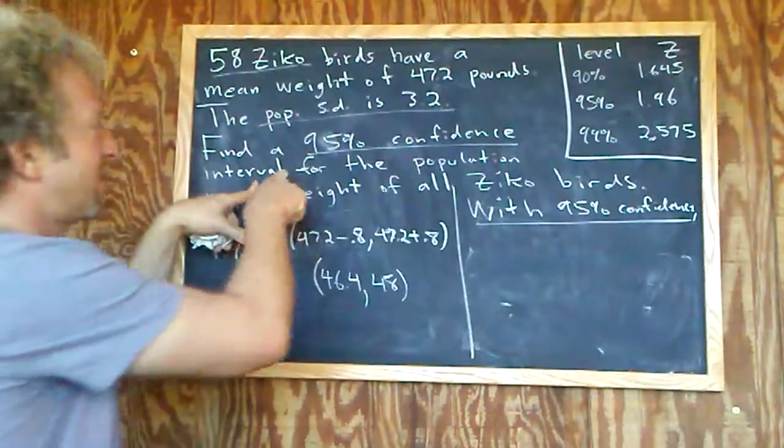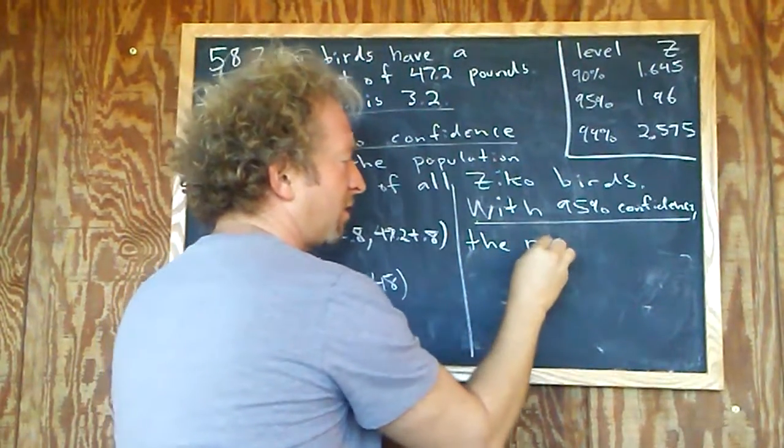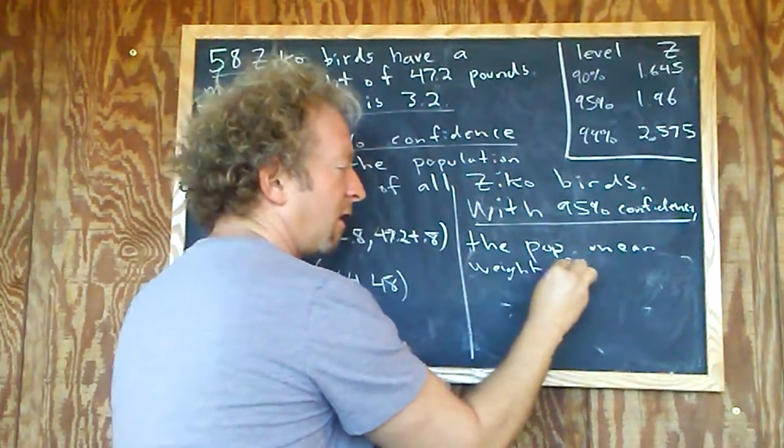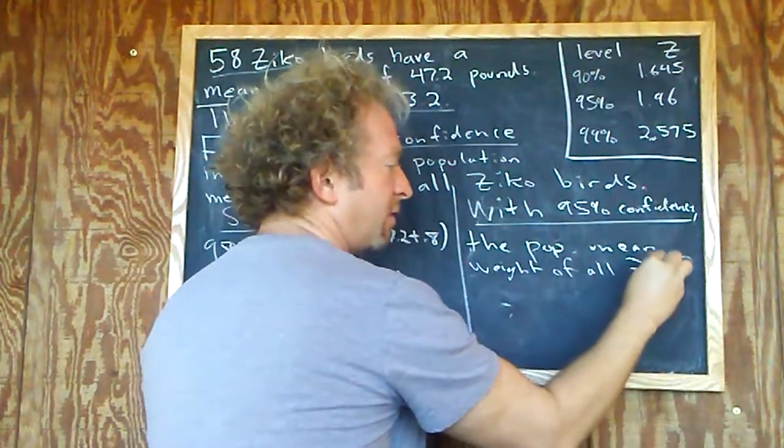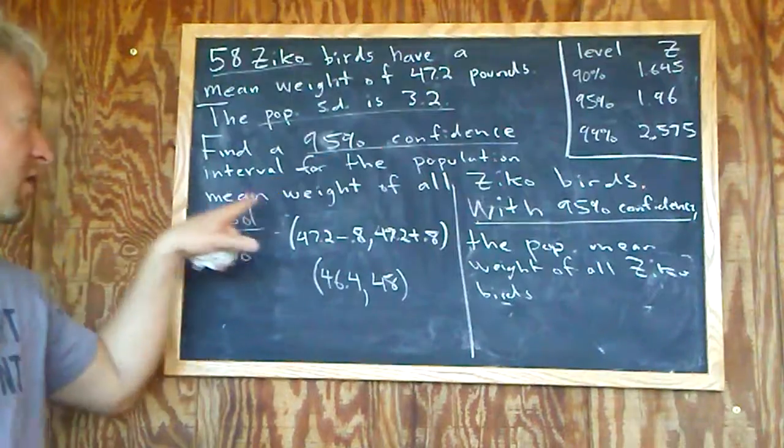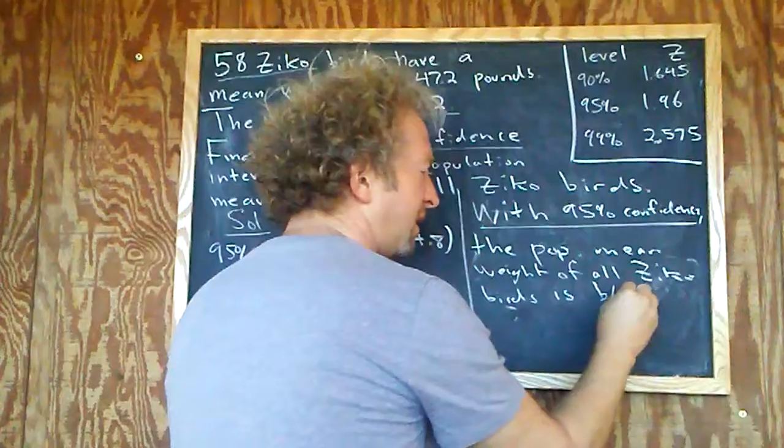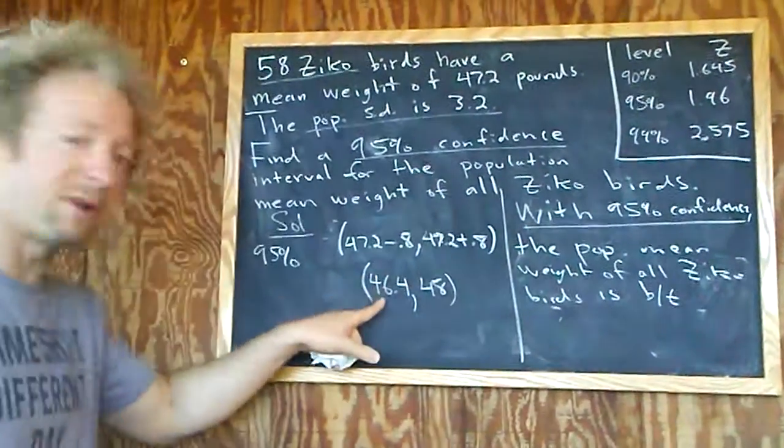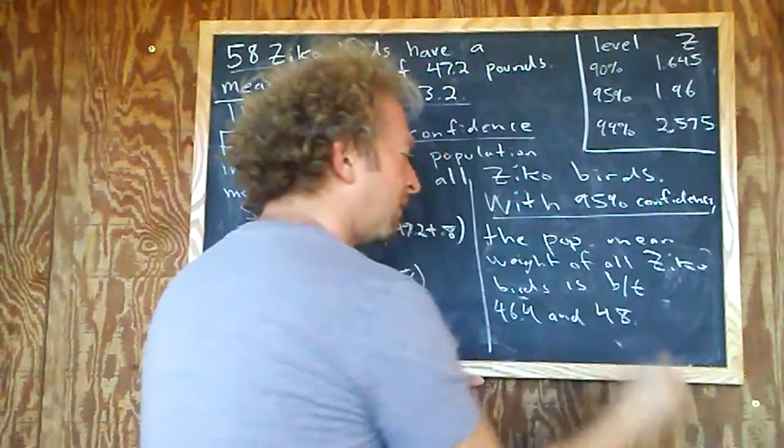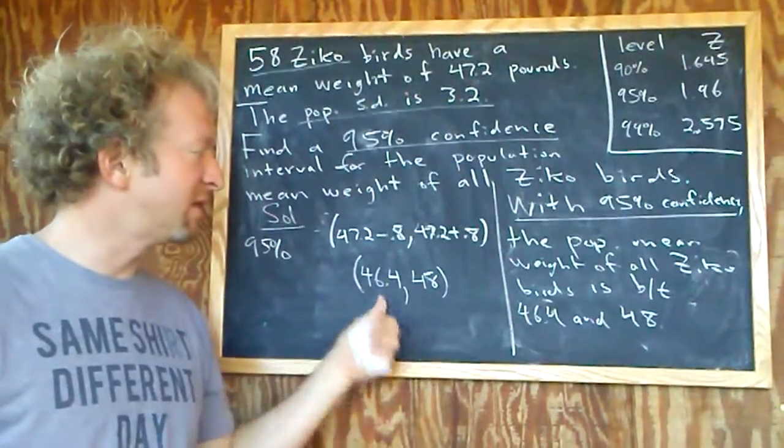So with 95% confidence, then usually you can just go to the last sentence, the population mean weight of all Zika birds. So start by mentioning the confidence level, then you go to the last sentence: the population mean weight of all Zika birds is between, and then you go to your answer, 46.4 and 48.